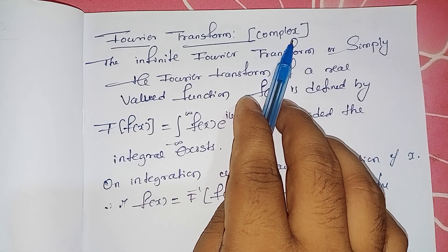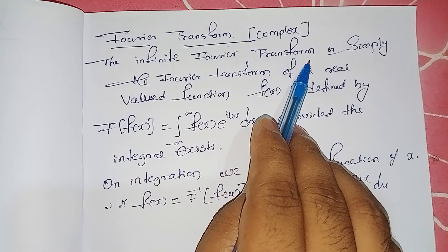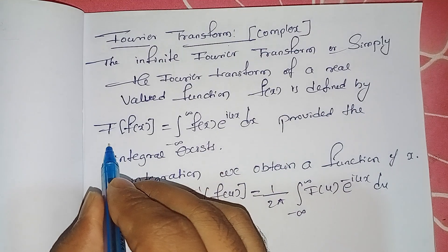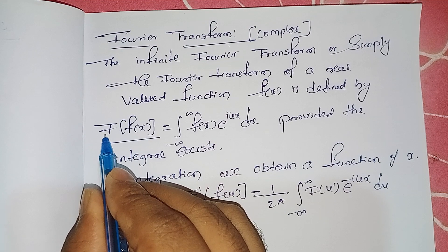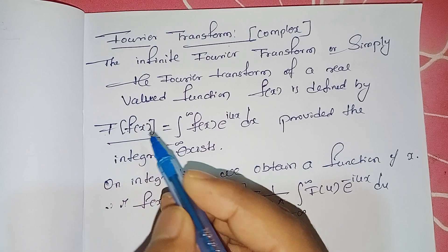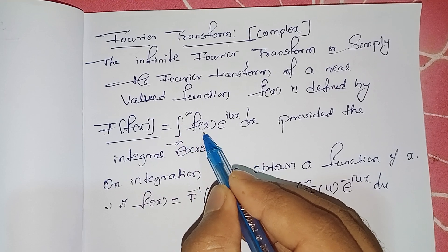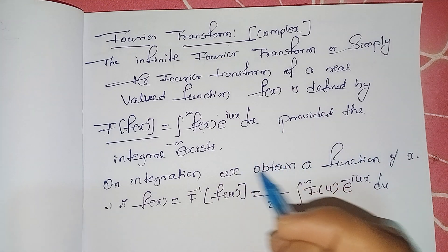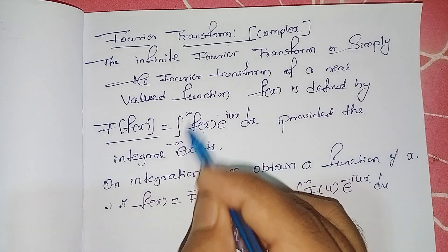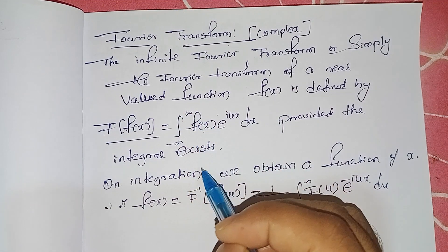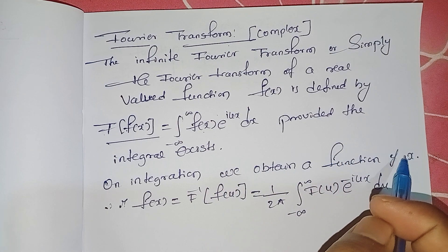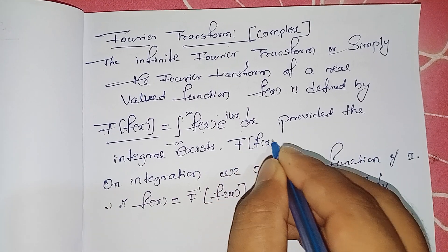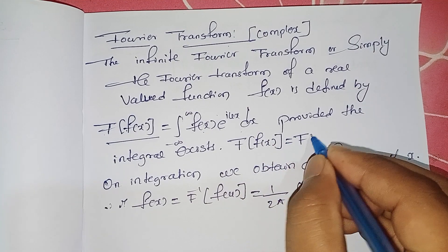The Fourier or infinite Fourier transform of a real-valued function f(x) is defined as: F{f(x)} equals the integral from minus infinity to plus infinity of f(x) times e^(iux) dx, provided the integral exists. After this definite integration we obtain a solution in terms of u, so the Fourier transform of f(x) is written as F(u).